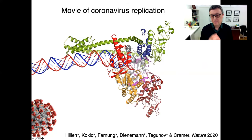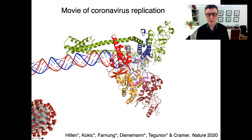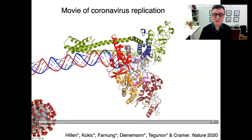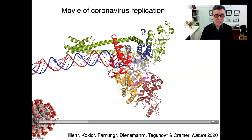Here we have visualized in a simple fashion the process of RNA-dependent RNA replication of the coronavirus genome, simply to give you an idea how the enzyme moves forward along the RNA template shown here in blue and how it extends the RNA product chain shown here in red. We can see nucleoside triphosphate substrates that enter from the right and bind in the active center of the enzyme where they are added to the growing RNA chain.